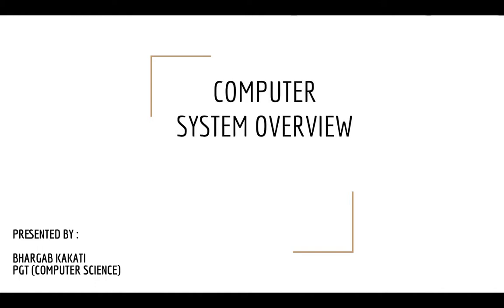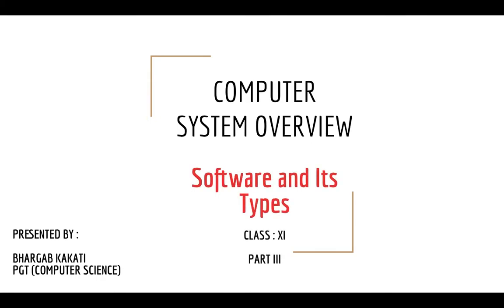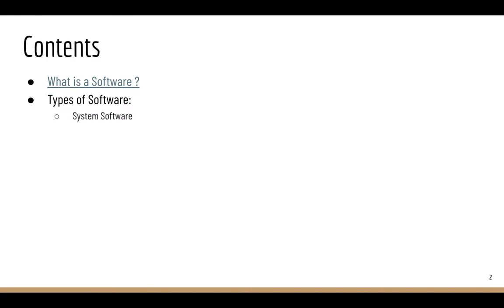Hello and welcome to the chapter on computer system overview. This is part 3, and today we are going to discuss software and its types. We'll start with the definition of software, then see the different types: system software — including operating system, language processors like compiler, interpreter, and assembler, and device drivers — and application software, which includes packages, customized softwares, system utilities, and developer tools.